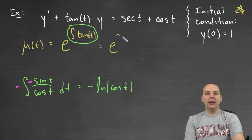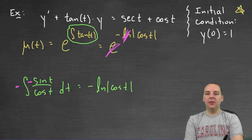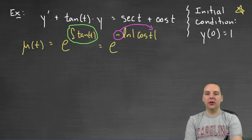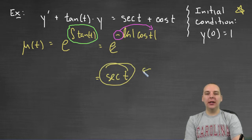This goes in the exponent: we get e to the negative natural log of absolute value of cos(t). I'd love to cancel the e and the natural log, but the negative is preventing that. Using the property of logarithms, we pull that negative back up into the exponent of cosine, so the e and natural log cancel, giving us cosine of t raised to the negative one power — or one over cosine t — which is secant of t. This is your integrating factor.